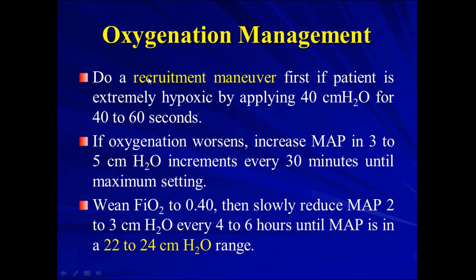For oxygenation management: when starting high frequency, perform a recruitment maneuver. Apply a mean airway pressure of 40 cm of water for 40 to 60 seconds, observing saturation and vitals. If oxygenation worsens, increase the mean airway pressure in increments of 3 to 5 cm of water every 30 minutes until reaching the target or maximum settings. When FiO2 reaches around 40%, gradually decrease mean airway pressure by 2 to 3 cm of water every 4 to 6 hours until reaching the safe range of 22 to 24 cm of water. At that point, the patient can be shifted back to conventional ventilation.